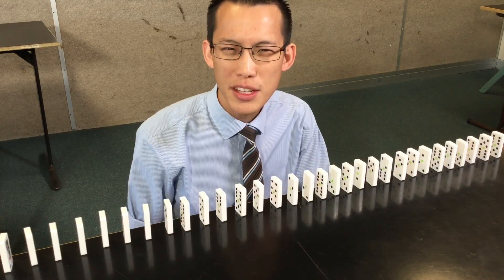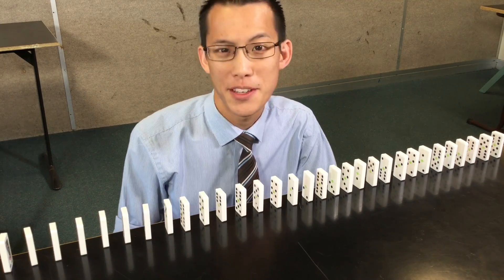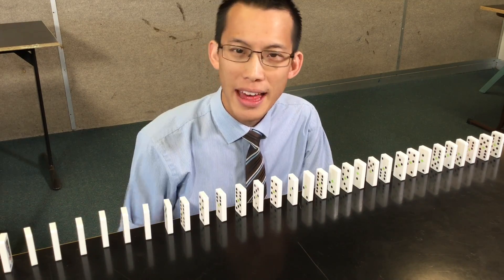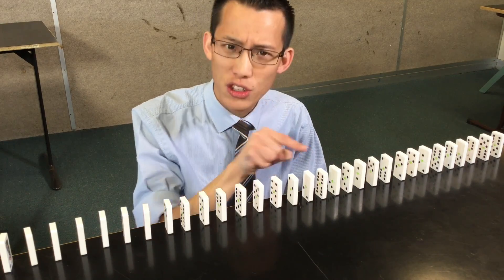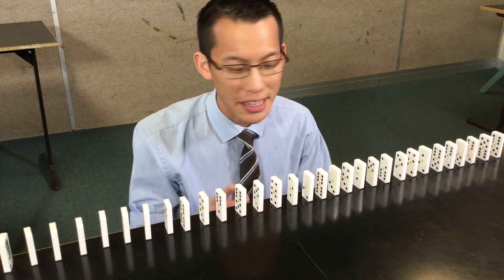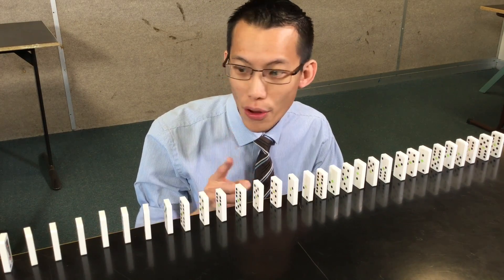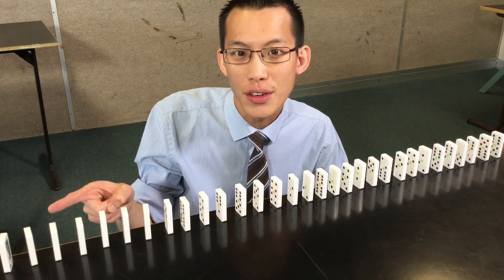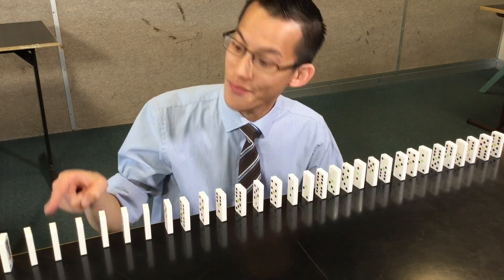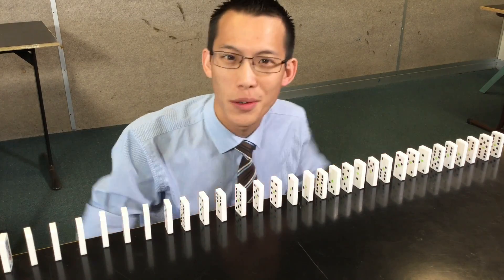Now we know that if the statement's true for one value, then it must be true for the next value as well. That's like knowing that if any one of these dominoes fall, then the next one is also guaranteed to fall. But since we showed it's true for the first value, that means it's true for the second value, and the third, all the way to infinity.